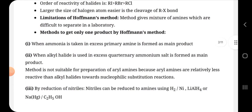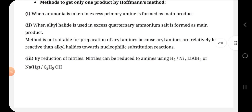Methods to get only one product by this method: when ammonia is taken in excess, primary amine is formed as the main product. Then, when alkyl halide is used in excess, quaternary ammonium salt is the main product.